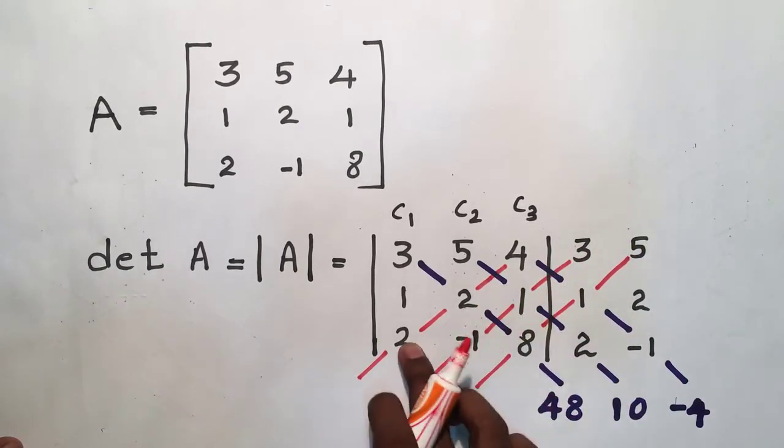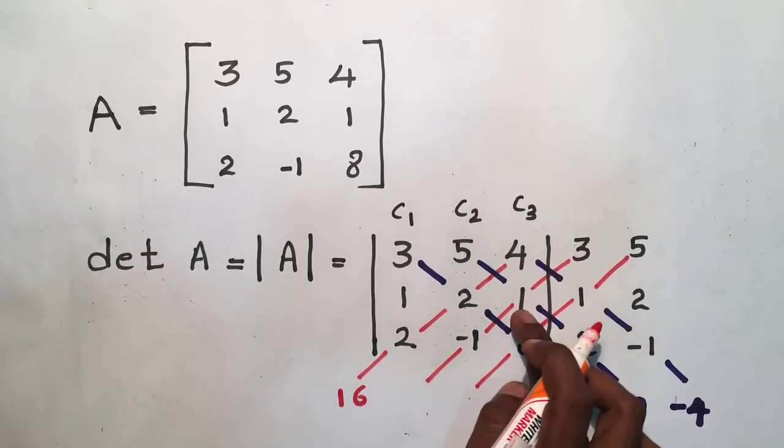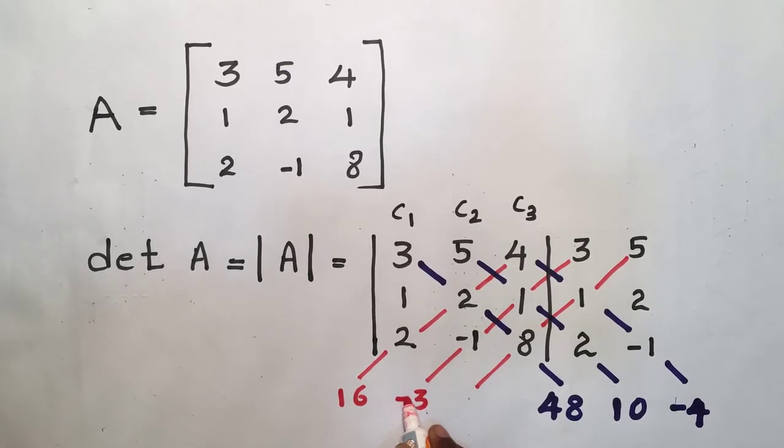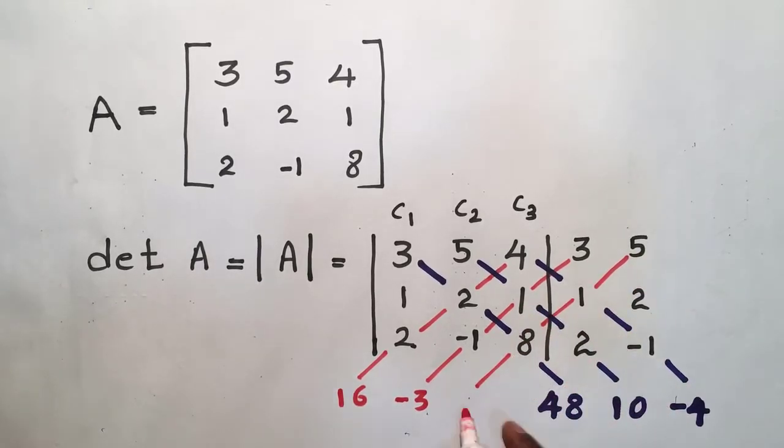4 into 2 into 2 is 16. The second diagonal is 3 into 1 into -1, which is -3. And the final diagonal is 5 into 2 into 8, which is 40.